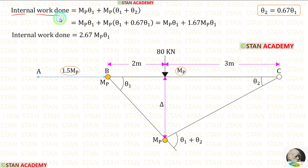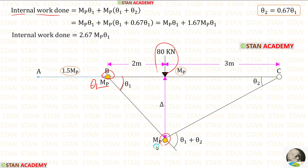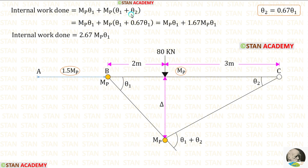Now let us find the internal work done. At joint B, we have a plastic hinge — we multiply Mb with angle theta 1. Under the point load, we have a plastic hinge — we multiply Mb with angle theta 1 plus theta 2. Adding these two terms and substituting theta 2 as 0.67 theta 1, we get the internal work done equal to 2.67 Mb theta 1.